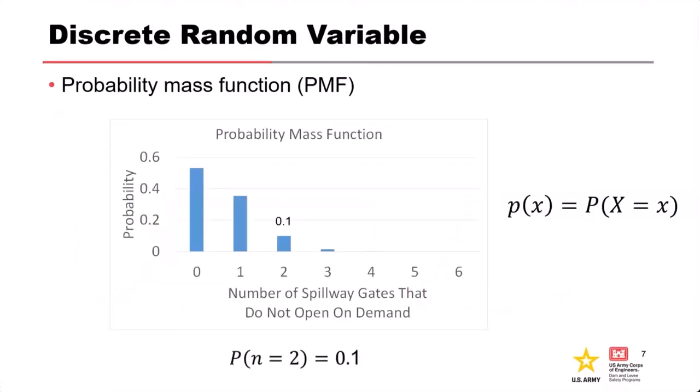There are two general types of random variables. For discrete random variables, we use the probability mass function, which gives us a probability for each of the possible values of the random variable. In this example, we have the number of spillway gates that don't open when we push the open button. Each possible outcome — zero, one, two, three, four, five, or six gates — has a probability associated with it.